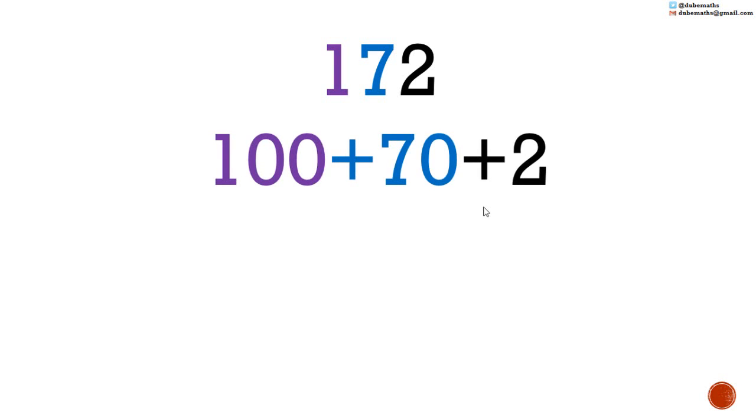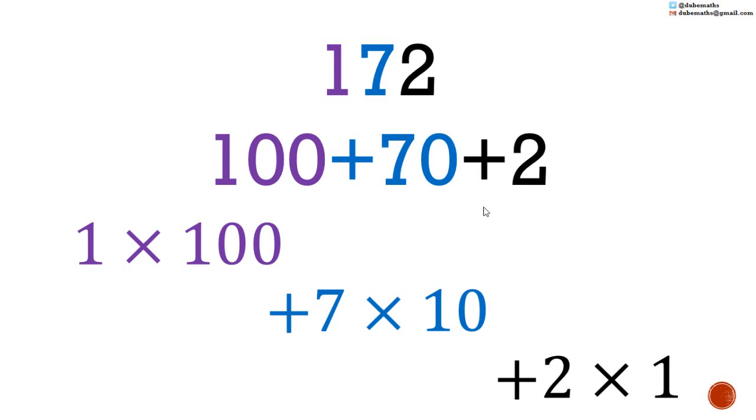What we may not realize or have known is that we are actually abbreviating. It's 1 multiplied by 100 plus 7 multiplied by 10 plus 2 multiplied by 1.